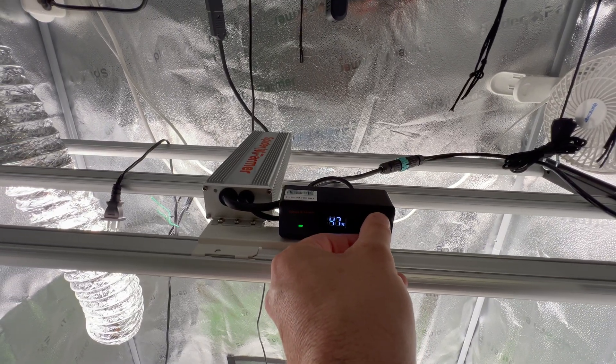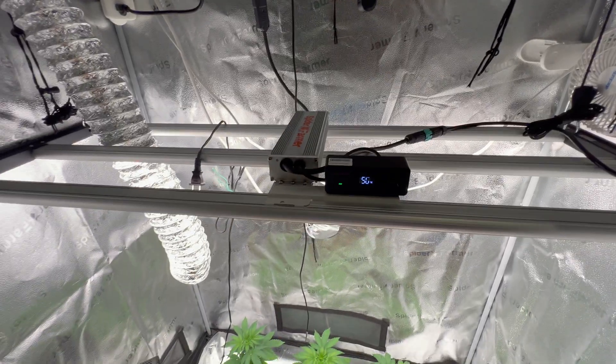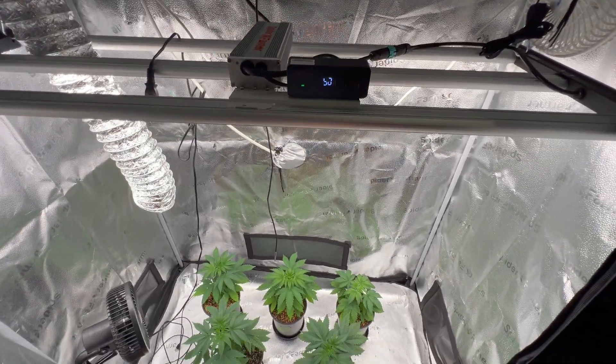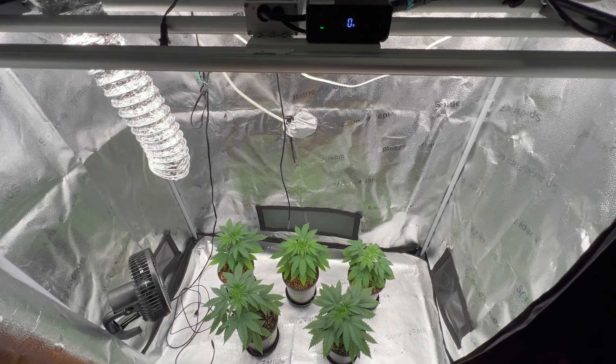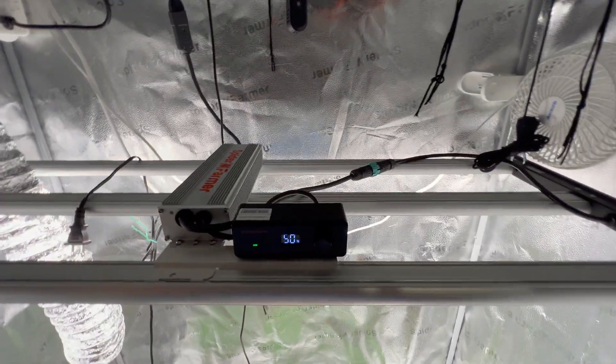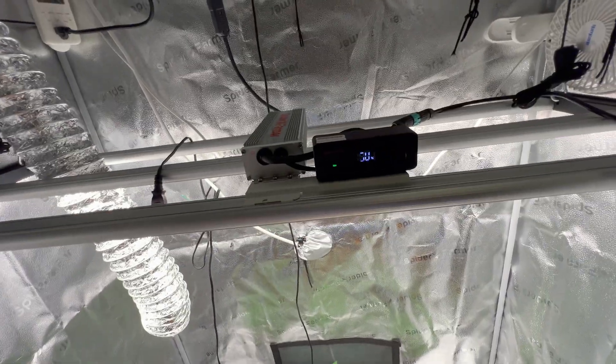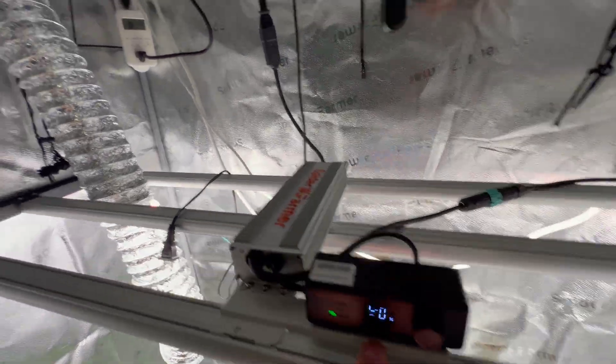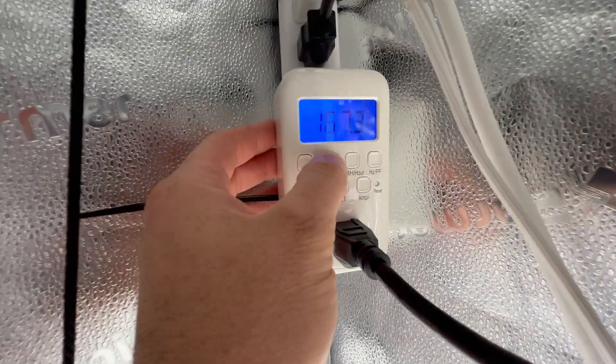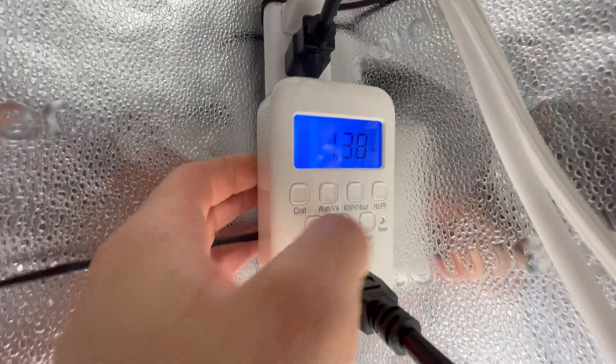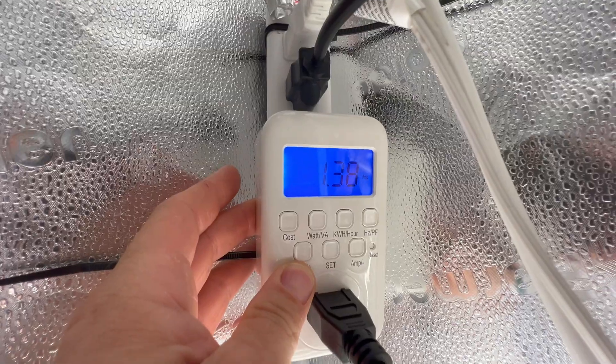Yeah go check out the Magic Candy Mountain OG grow which was the season right before this and check out the other three videos that are out for this grow so you can catch up on it. But we are at 50 percent right now and that is putting out 167.2 watts at 1.38 amps.